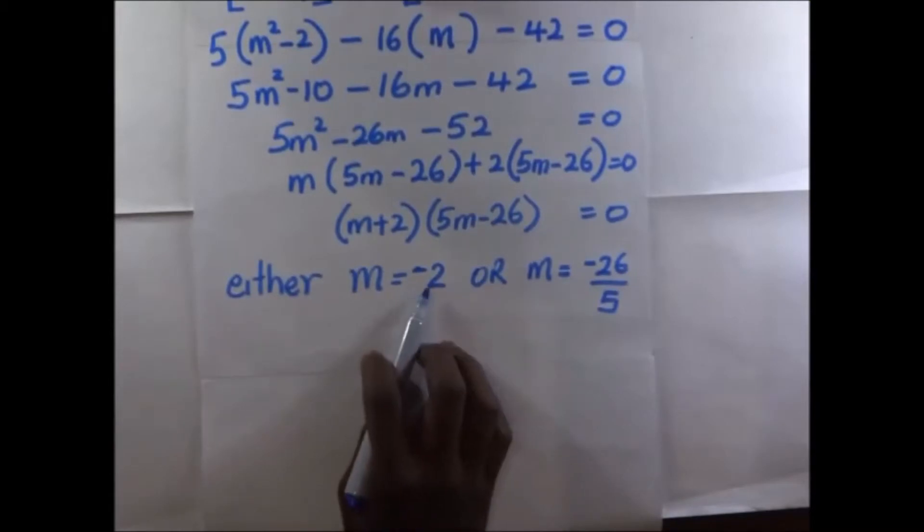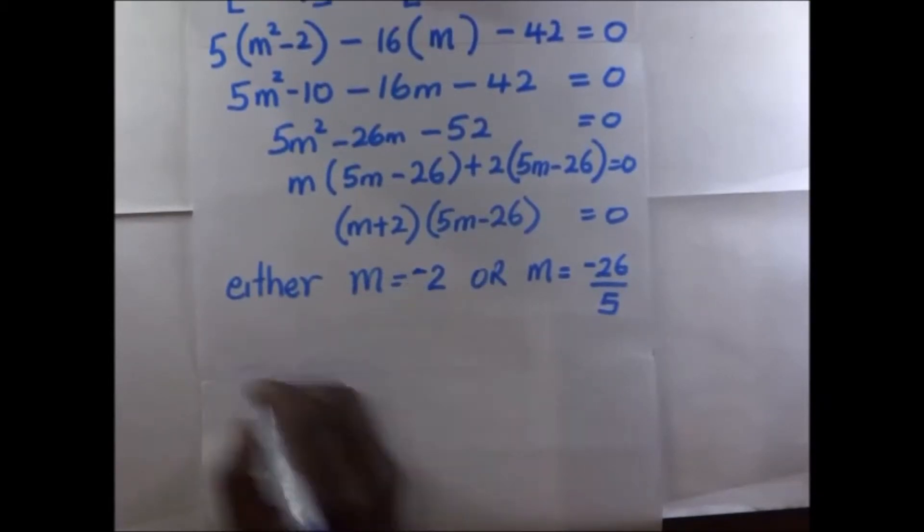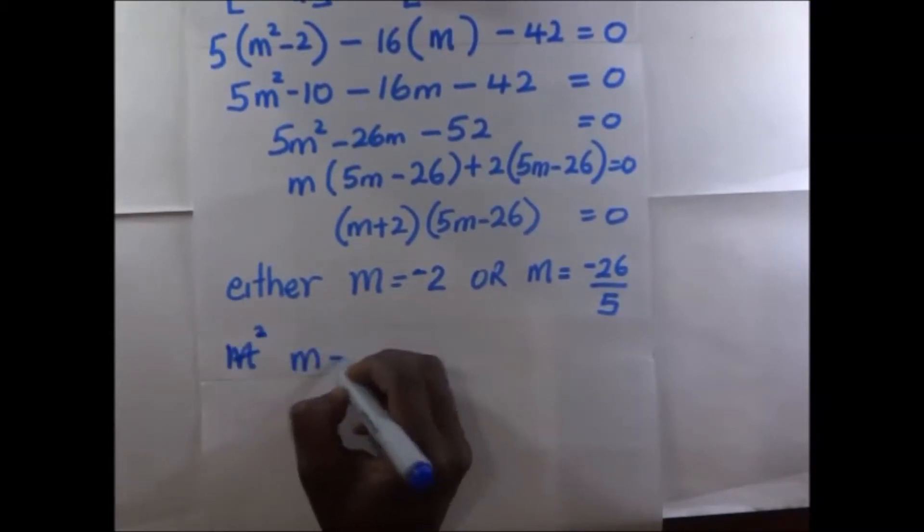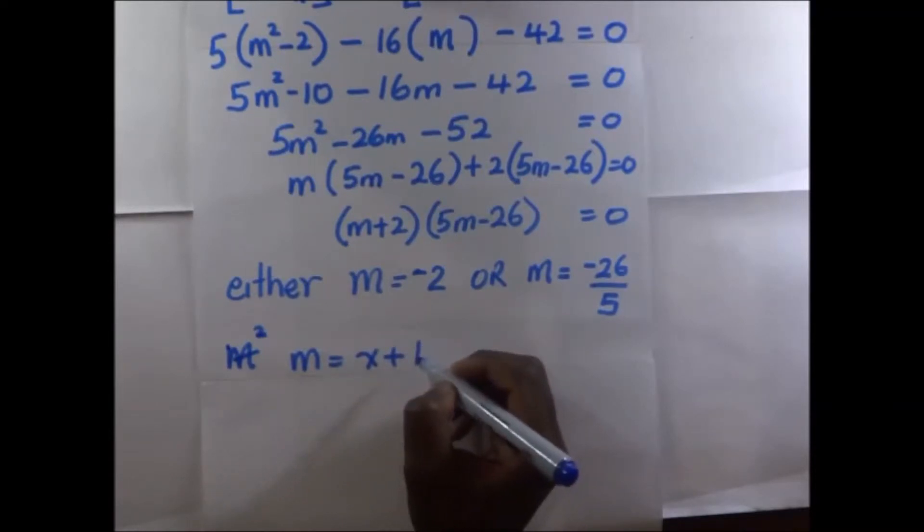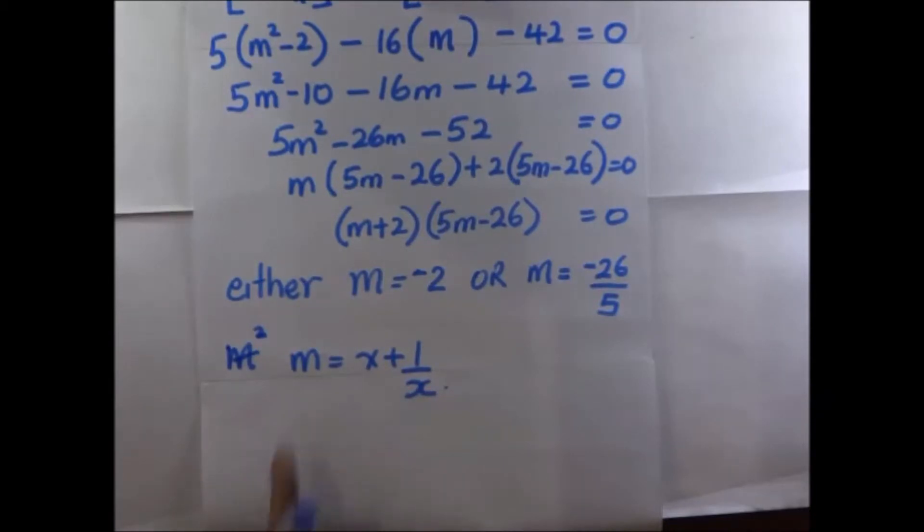So after getting our values of M, remember that M at first M is equal to x plus 1 over x. So now we begin when M is negative 2, what is x?